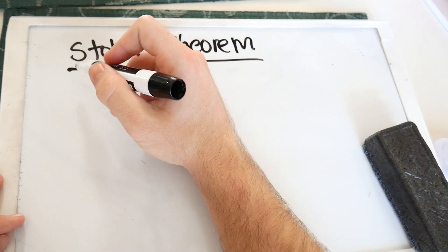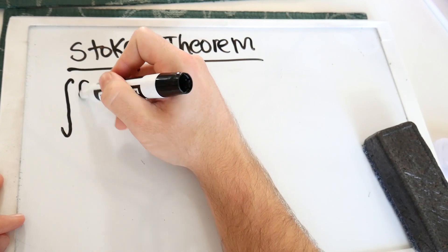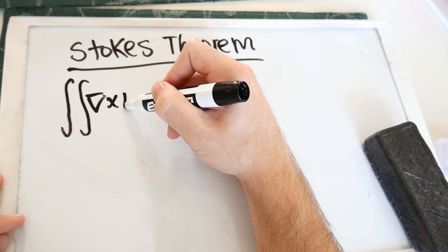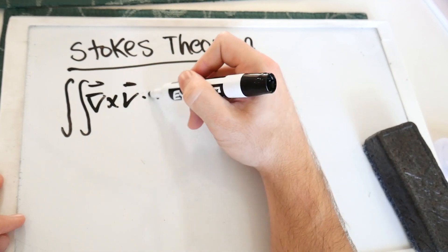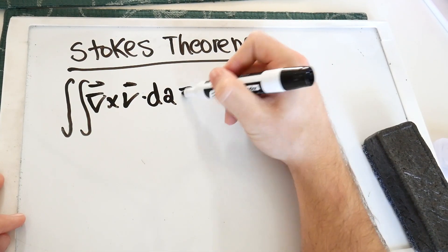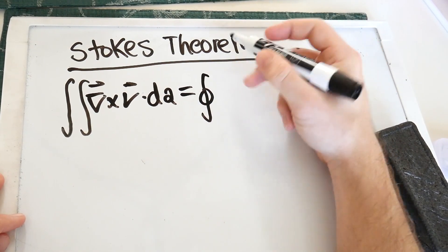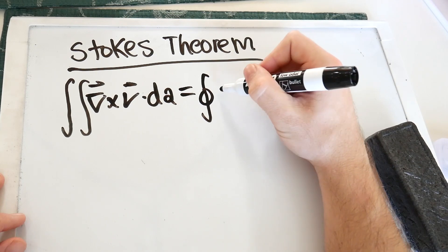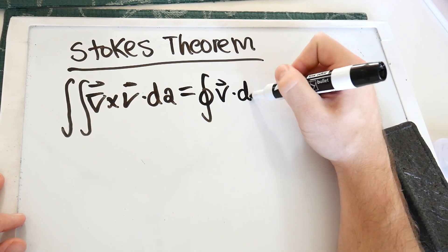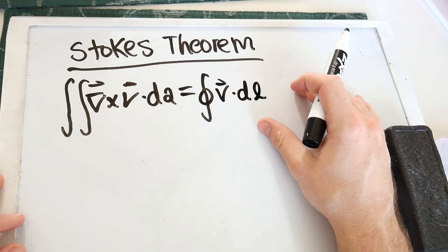Stokes' theorem is defined as this: if we take a two-dimensional integral of the curl of some vector field dotted into an area, this is equal to — Stokes' theorem says this is equal to a closed line integral, or a closed path integral, of that vector dotted into a line element.